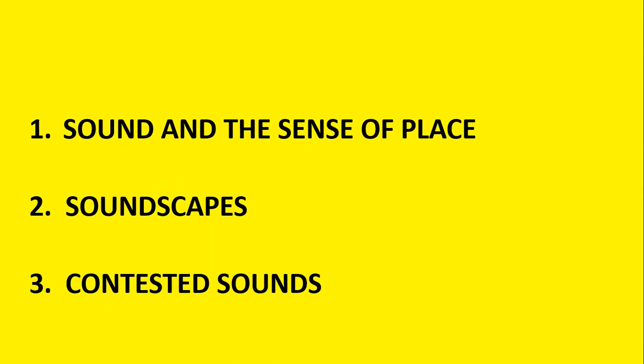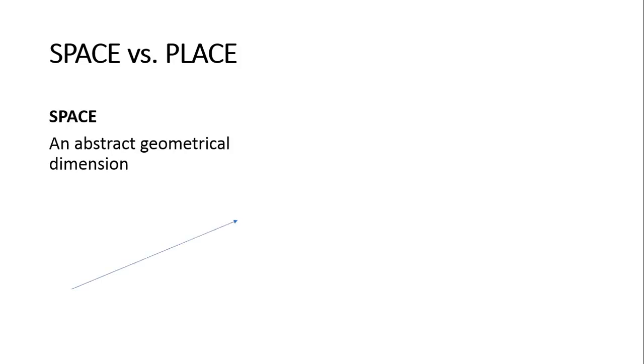Before we get into sound, it might be helpful to pause for a moment on two words I've just used: space and place. These are words we use in everyday speech, that we usually take for granted and sometimes use almost interchangeably. However, they do indicate different things. Space is an abstract geometrical dimension — something we all experience when we move or travel in terms of distance, but something we can't really picture in our mind. Space is invisible, intangible, ungraspable, abstract, and can also be infinite.